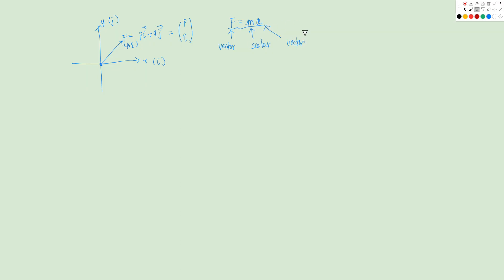We can write this acceleration in vector format as well. For example, if we have force F = Pi + Qj, then M times acceleration equals Pi + Qj. Because M is a scalar, we can divide both sides by M. So the acceleration will be (P/M)i + (Q/M)j, or written in column form as (P/M, Q/M).